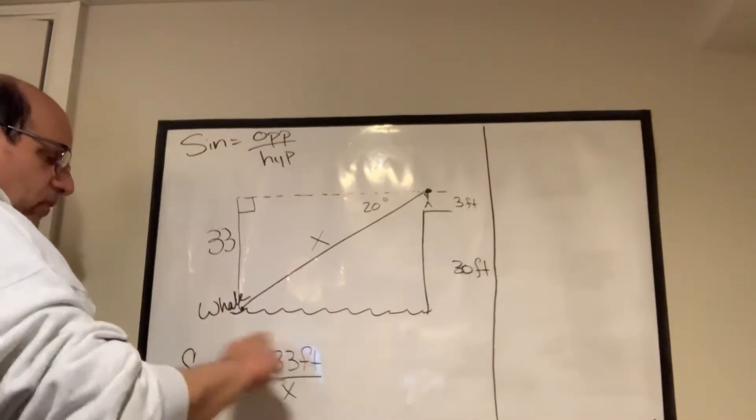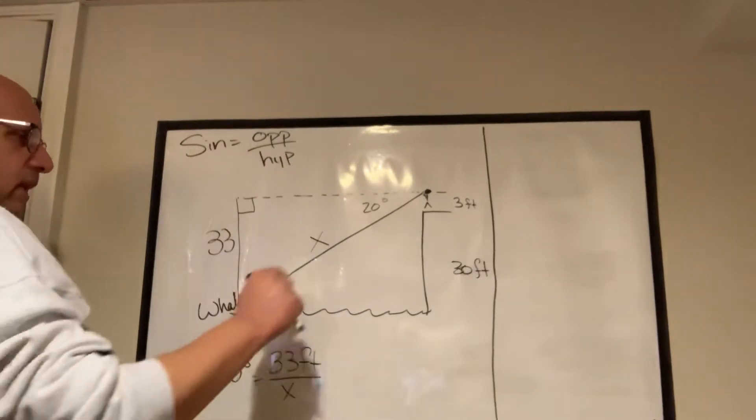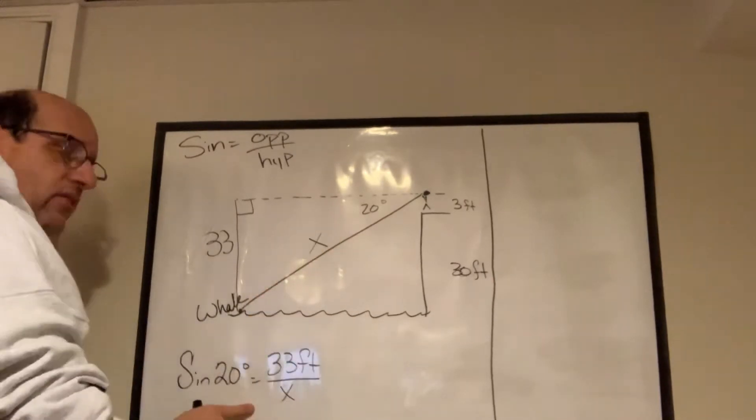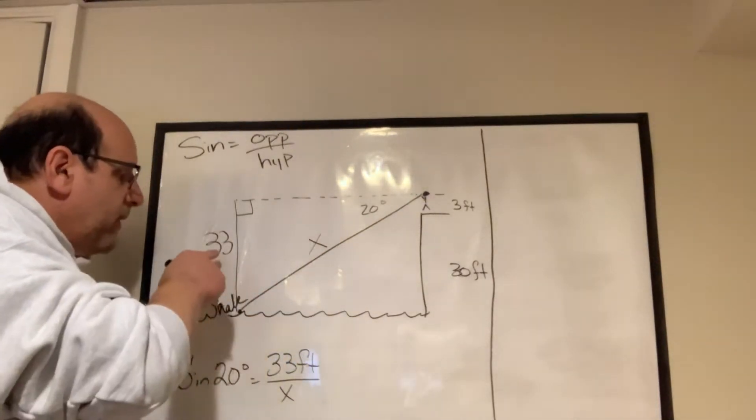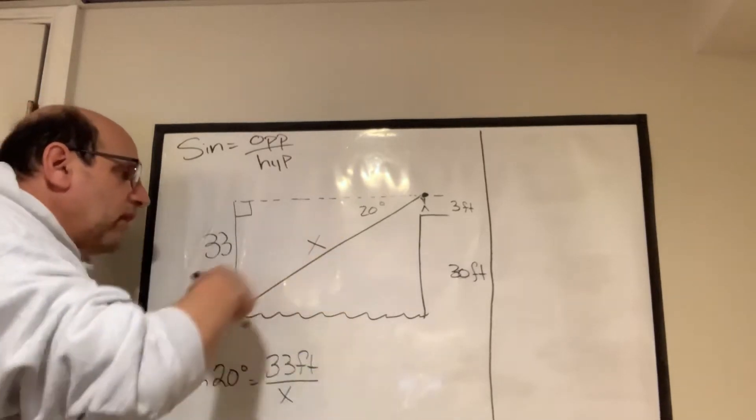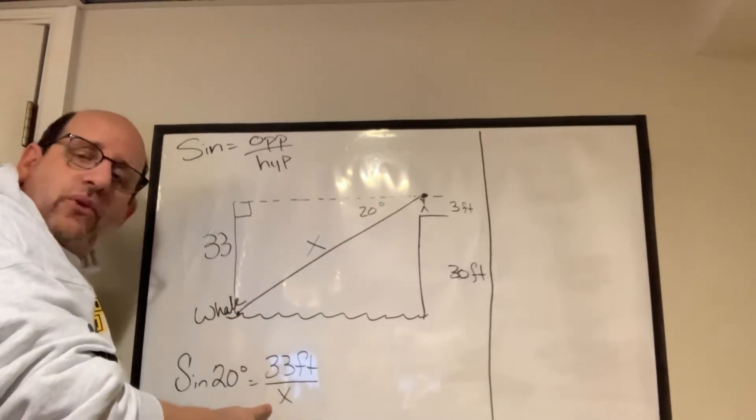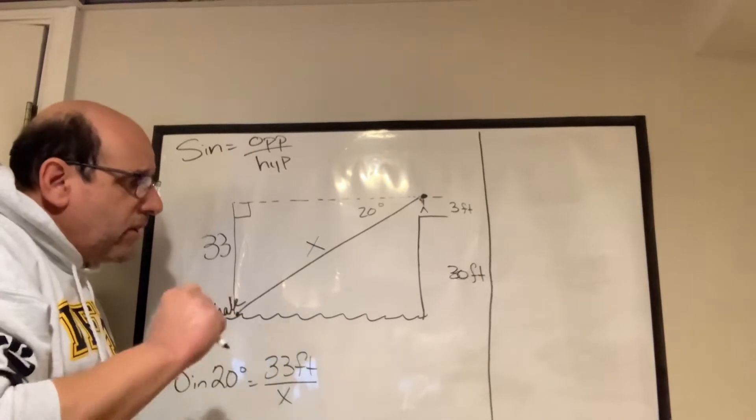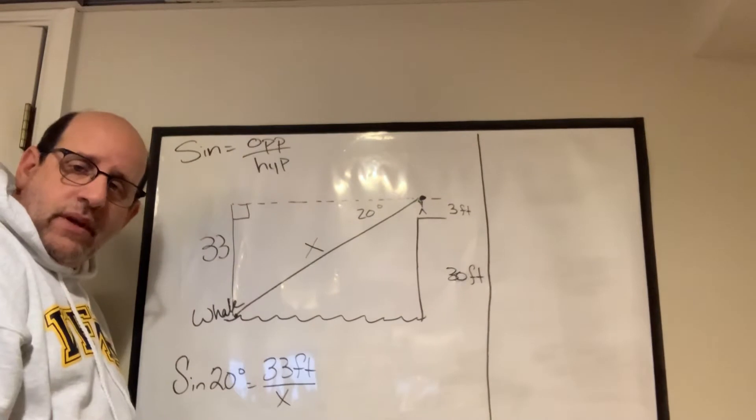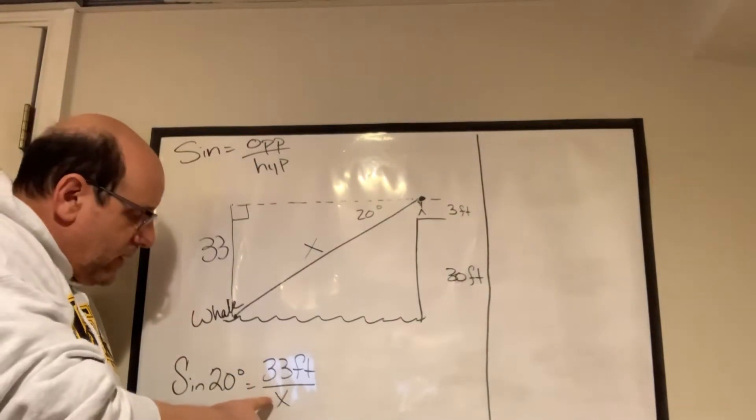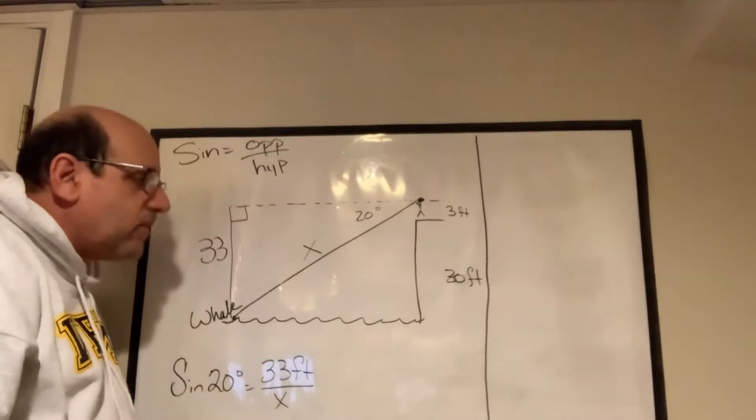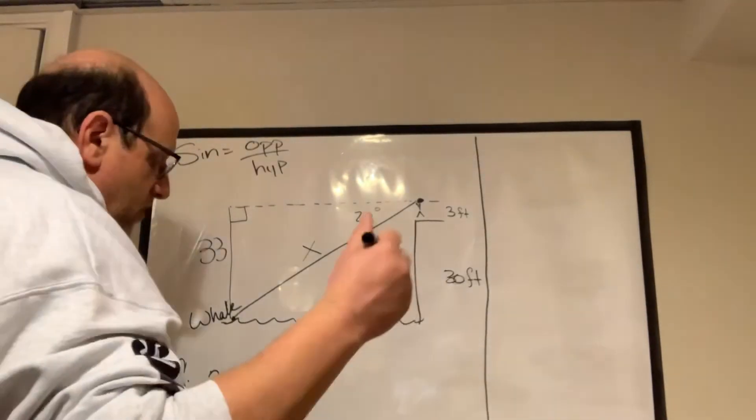And I'm going to show you a little trick here. I've written it out. I've said that the sine of 20 degrees is equal to the length of the opposite side, 33 feet, over the length of the hypotenuse, which is what we're looking for. That's X. And what I'm going to show you here is that these two things are interchangeable. The X in a denominator can be interchanged with an answer on the other side of the equals sign.